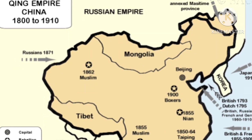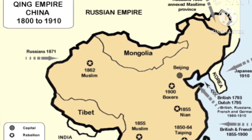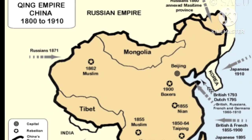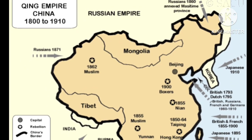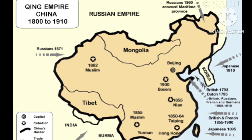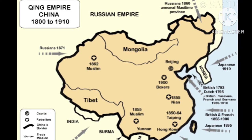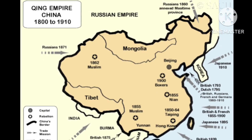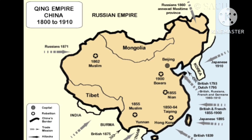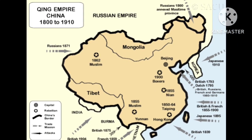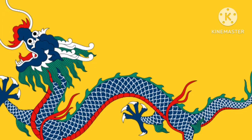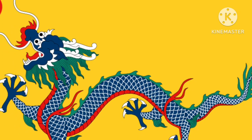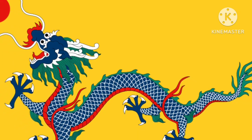The Qing dynasty, also known as the Manchu dynasty, was the last imperial dynasty in China. It ruled from 1644 to 1912, but by the end of the 19th century, the dynasty was in decline.